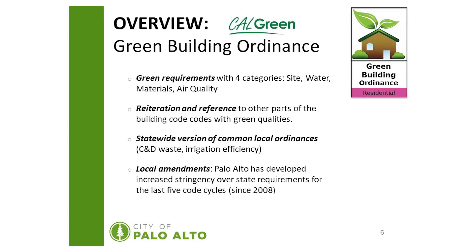The green requirements within Cal Green reside within the four categories mentioned: site, water, materials, and air quality. The contents of Cal Green contain several reiterations and references to other parts of the building code with green qualities. Cal Green also contains several statewide versions of common local ordinances, including construction and demolition waste and irrigation efficiency.